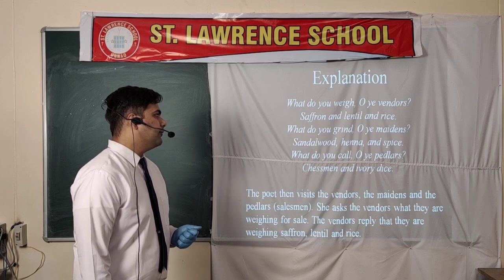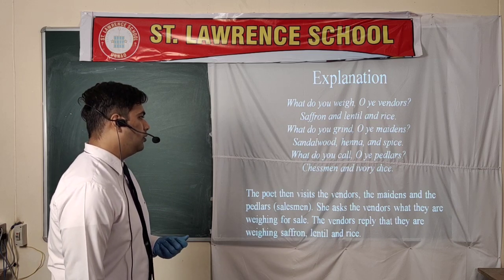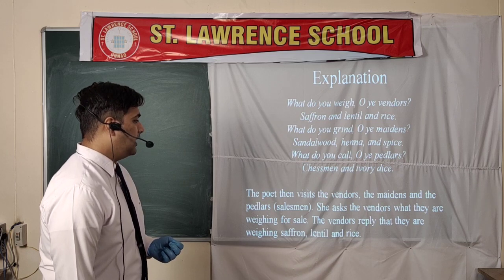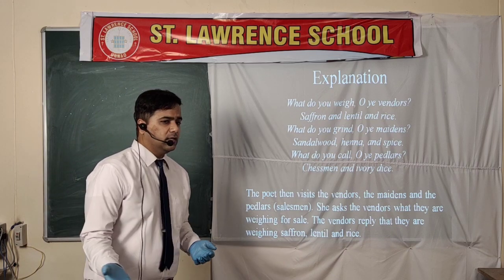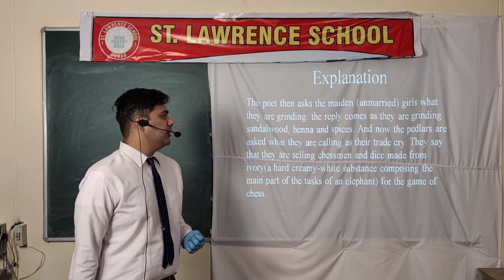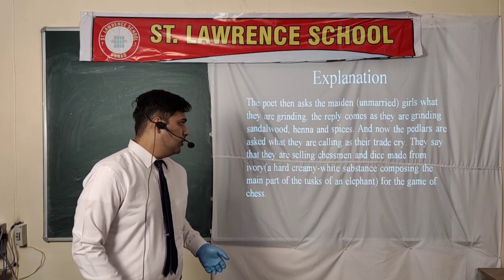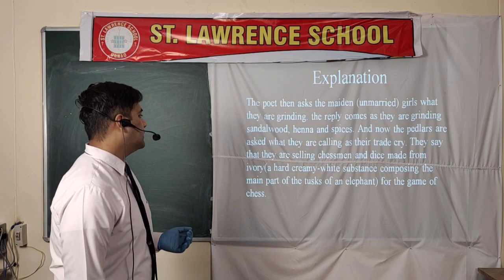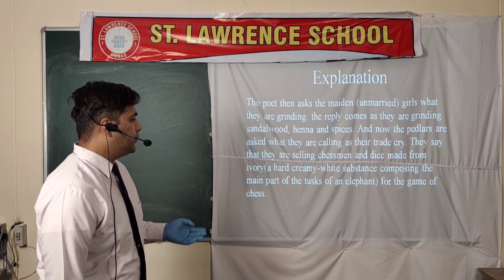'What do you weigh, O ye vendors? Saffron and lentil and rice. What do you grind, O ye maidens? Sandalwood, henna and spice. What do you call, O ye peddlers? Chessmen and ivory dice.' The poet visits the vendors, maidens, and peddlers. She asks the vendors what they are weighing — they reply saffron, lentil and rice. The maidens are asked what they are grinding — they are grinding sandalwood, henna and spices. The peddlers are asked what they are selling — they are selling chessmen and dice made from ivory.